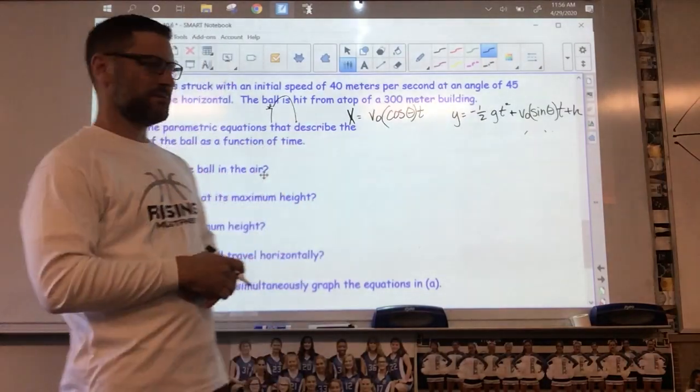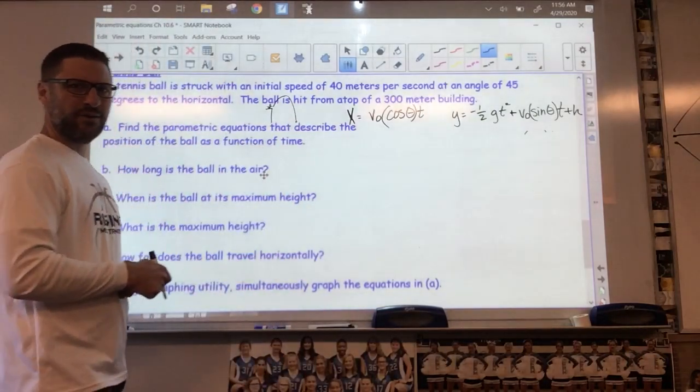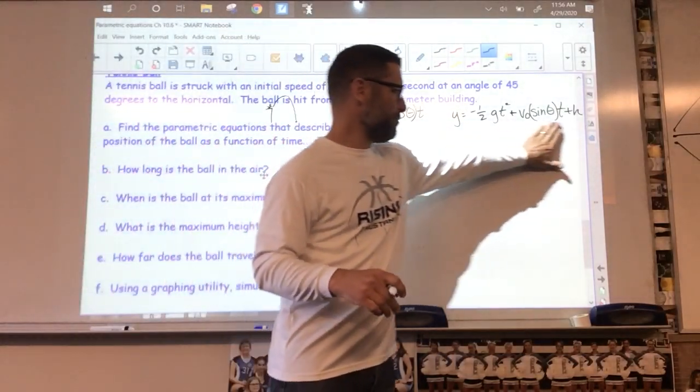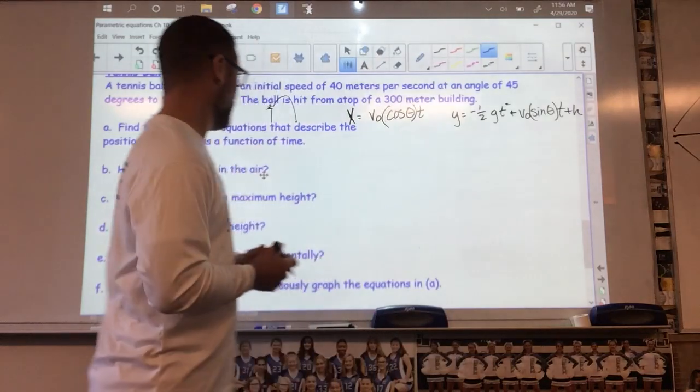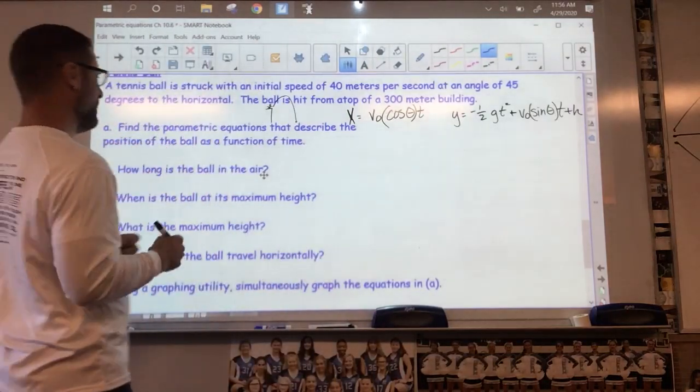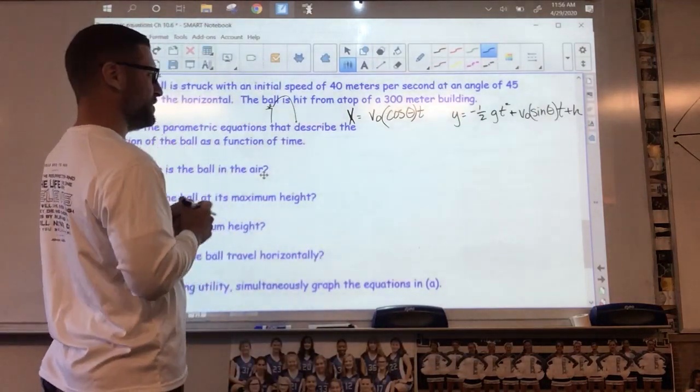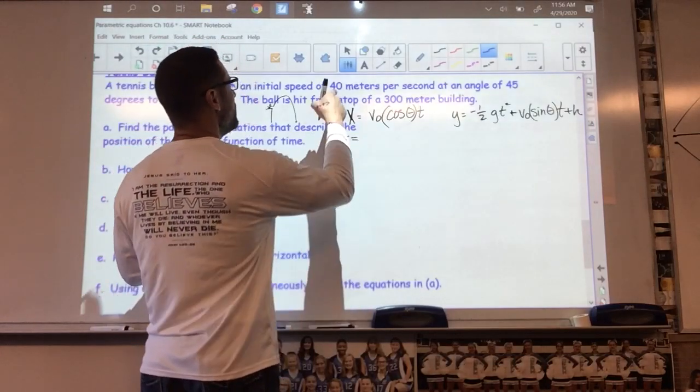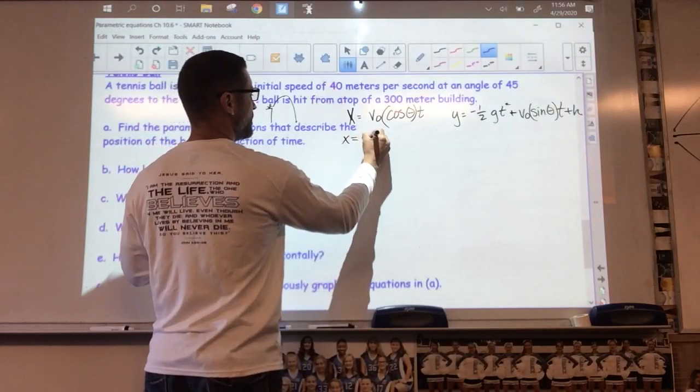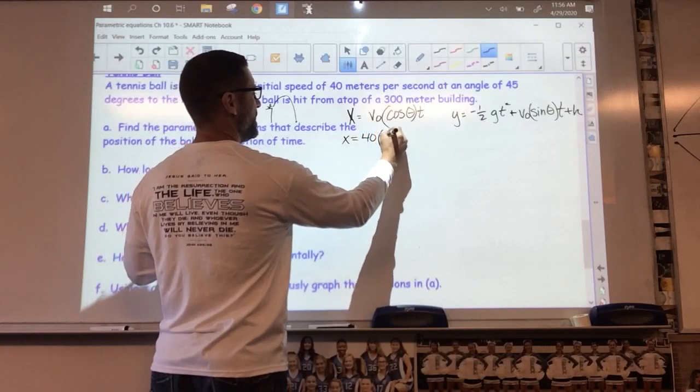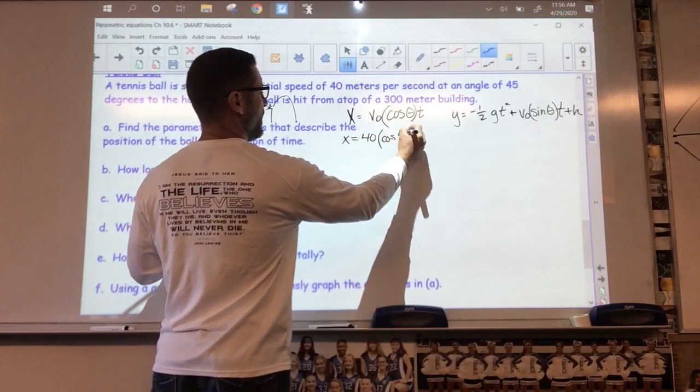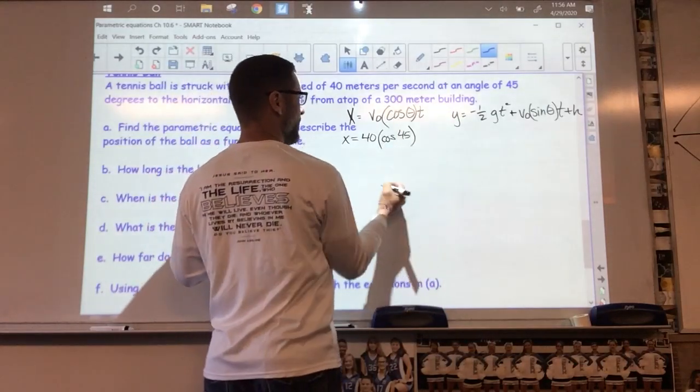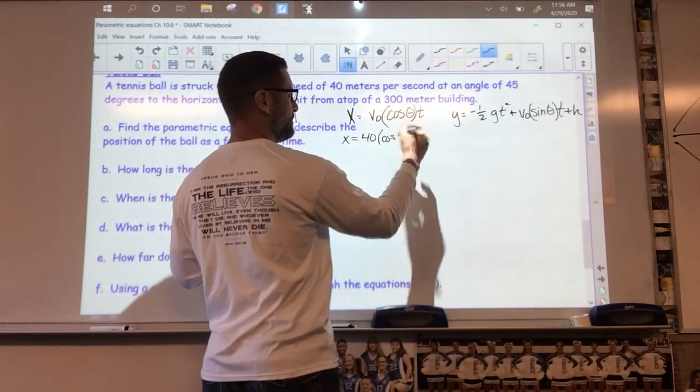Wind resistance would really probably play a factor in this, but we're not going to worry about that. Find a set of parametric equations that describes the position of the ball as a function of time. So x equals initial velocity, 40 meters per second, times the cosine of the angle, cosine of 45, which we know is radical 2 over 2. Cosine of 45 times time.